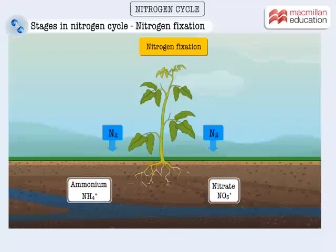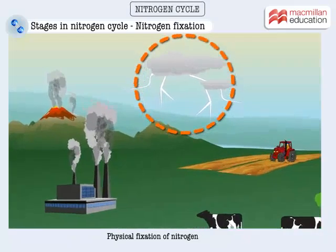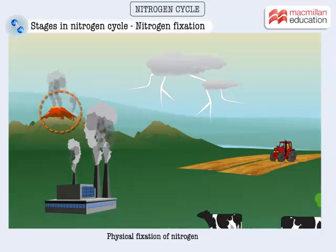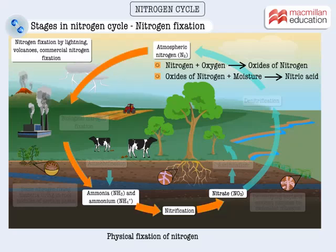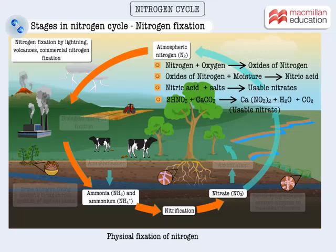Nitrogen fixation takes place in nature through physical activities as well as biological activities. Some physical activities that fix nitrogen are lightning and industrial processes that manufacture fertilizers. Hot volcanic eruptions also promote the fixation of atmospheric nitrogen into biologically available forms. In the presence of high energy, inert nitrogen reacts with oxygen to form oxides of nitrogen. These oxides mix with moisture and return to soil as nitric acid, which further reacts with lime and other salts present in soil to form nitrates, as shown in the reaction here.